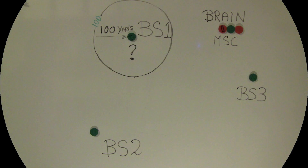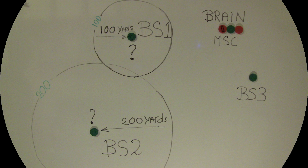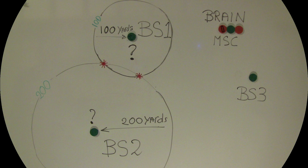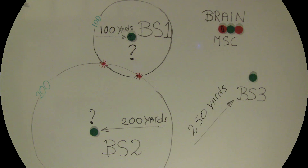The brain commands base station controller number two to send the 'where are you' signal. Your smartphone replies, and now the brain knows you are somewhere on the 200 yards circle. But now the brain knows there are only two possibilities where you might be. The brain then commands base station controller number three to send the 'where are you' signal, and your smartphone replies — now the brain knows your exact location.